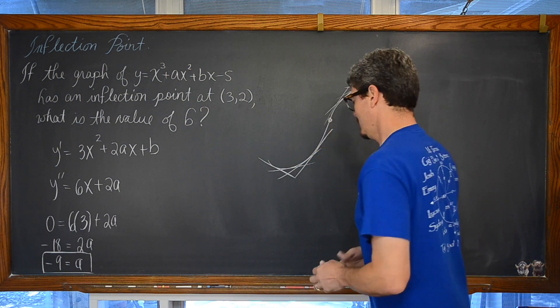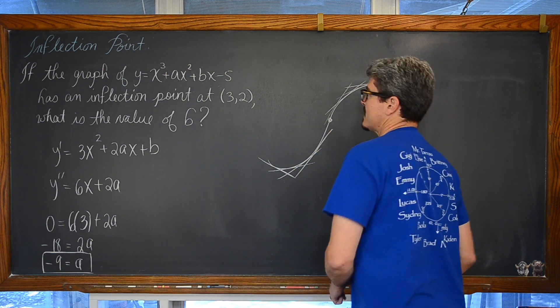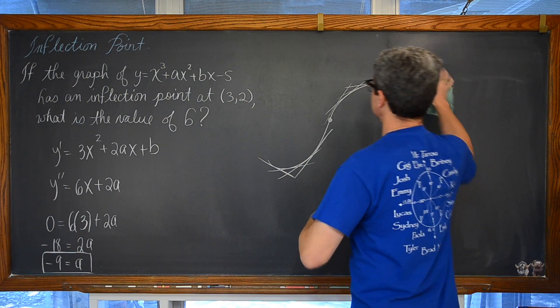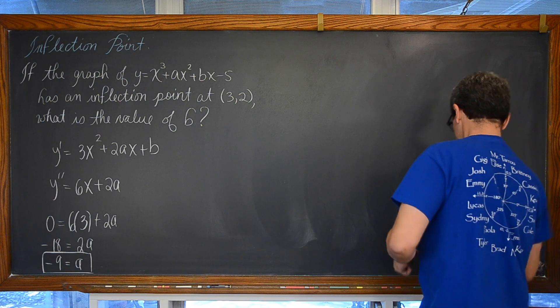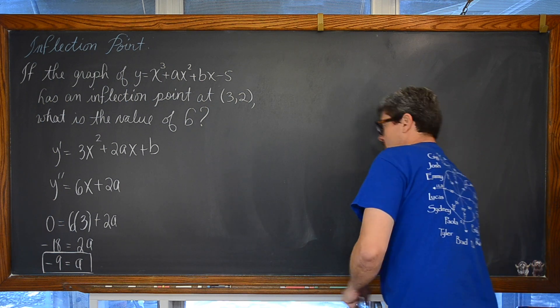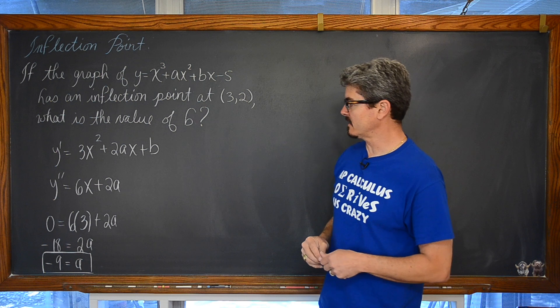But that is not actually what the question was asking for. The question was asking for you to solve for b. Now what do we do with that new information that a is equal to negative 9?